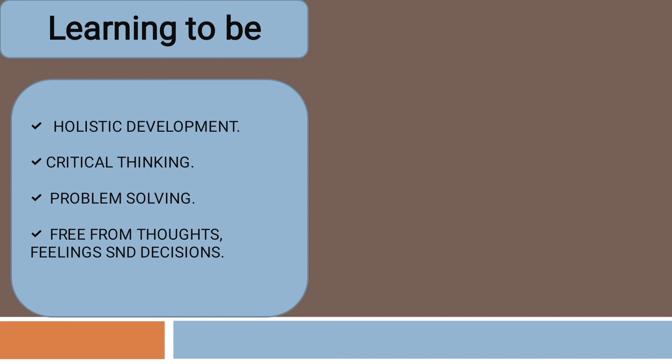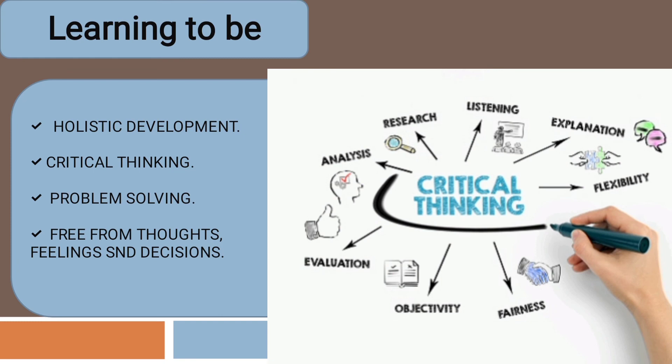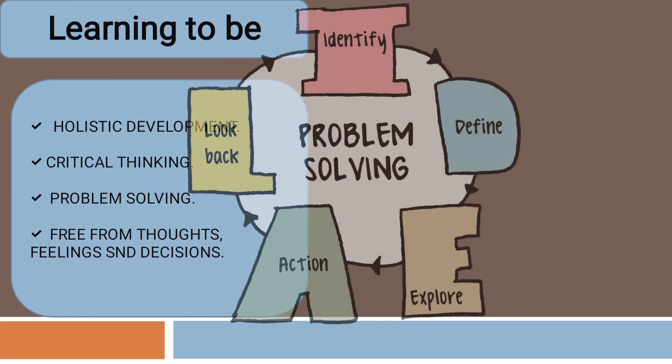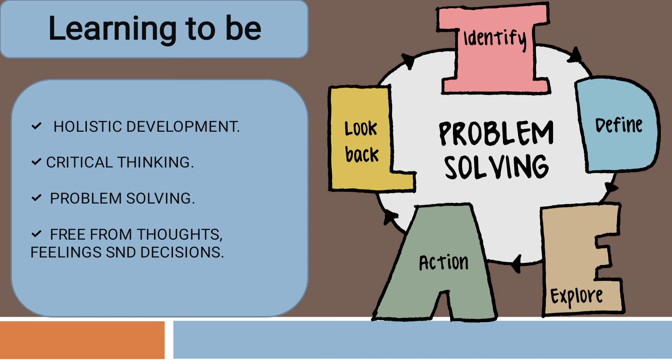The next is critical thinking — we have to bring out the best in children so that they can understand both their good and bad. Next is problem solving — we have to provide such education to the child so that they can understand themselves and become responsible persons. Next is freedom of thoughts, feelings, and decisions — they can find their own thoughts and feelings. Learning to be is about the child's all-round development.